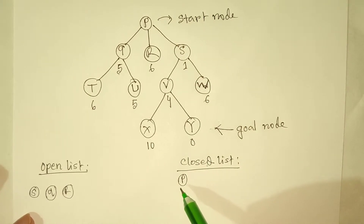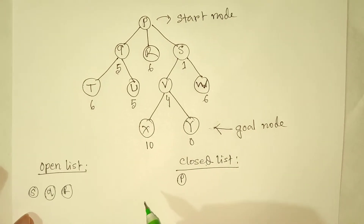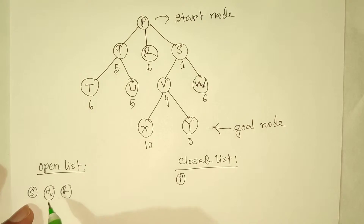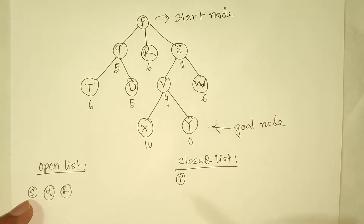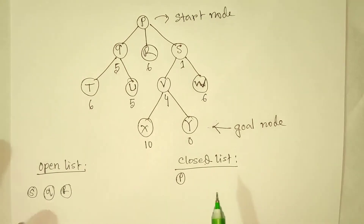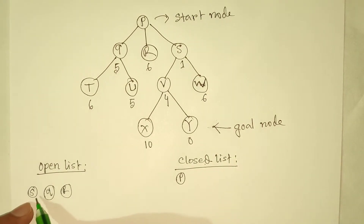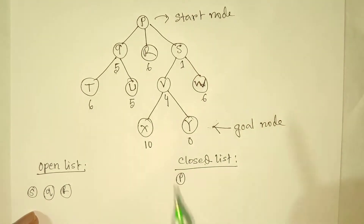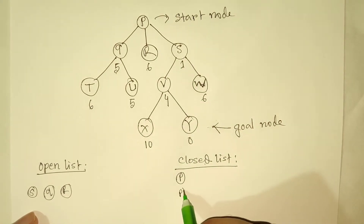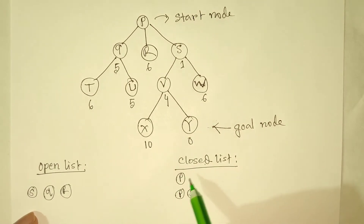Since P is not our goal node we perform the algorithm further and choose the next node from the open list. We choose the node with the smallest heuristic value, which is S with a value of 1 — also the first node in the open list since the list is already sorted. We visit S and add it into our closed list. We now have P and S in the closed list.